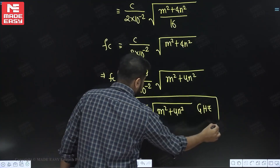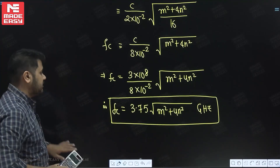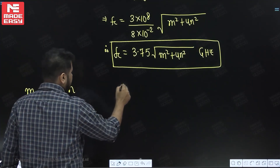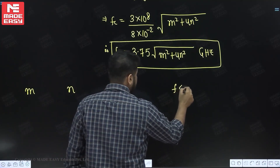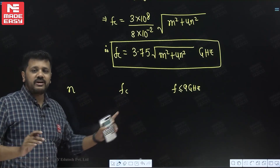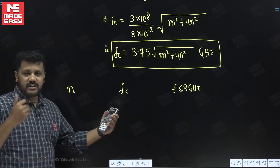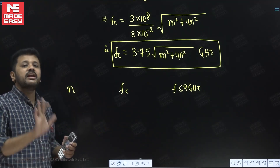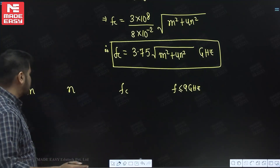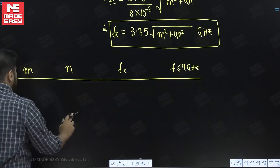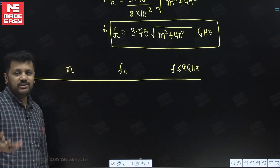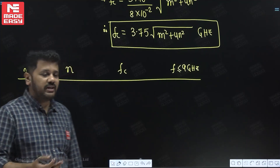Now we make a table of m, n, and cutoff frequency, checking which values give FC less than 9 gigahertz. We know that the mode (0,0) does not exist for either TE or TM, so we start from (0,1).